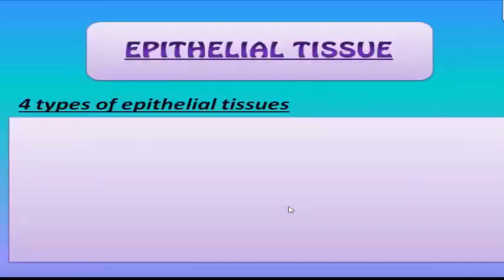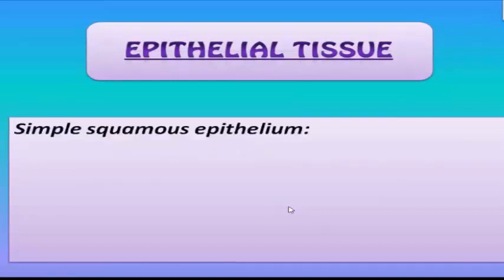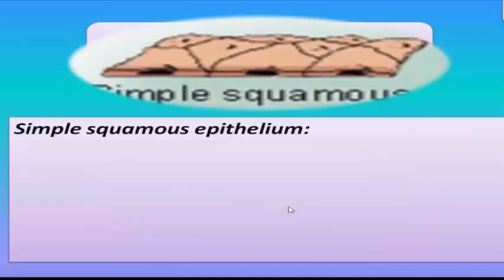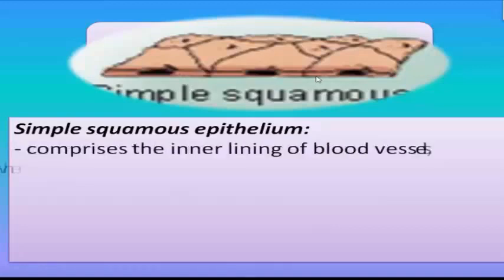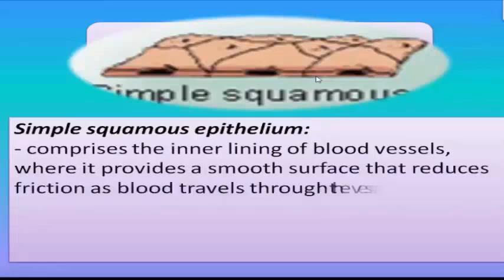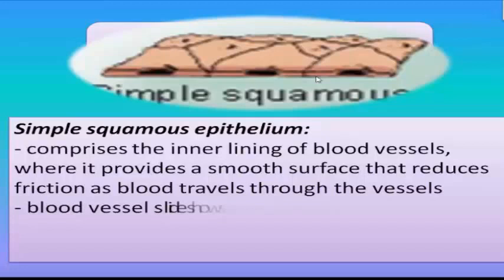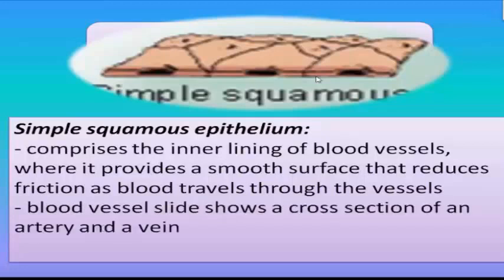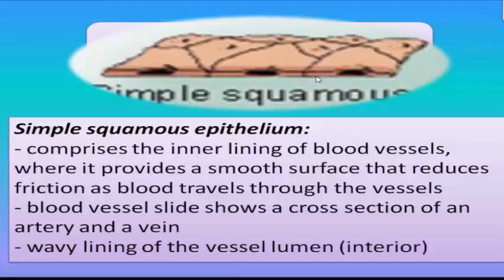Epithelial tissue has four types. First, we have simple squamous epithelium — one layer, squamous, flattened. This comprises the inner lining of blood vessels, where it provides a smooth surface that reduces friction as blood travels through the vessels. This epithelium blood vessel slide shows a cross-section of an artery and a vein, with a wavy lining of the vessel lumen visible in the interior.